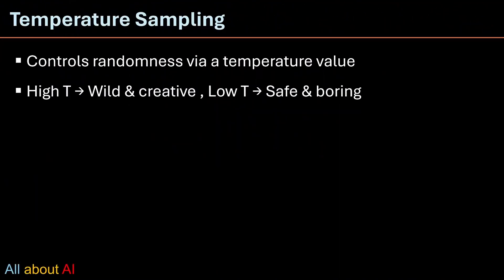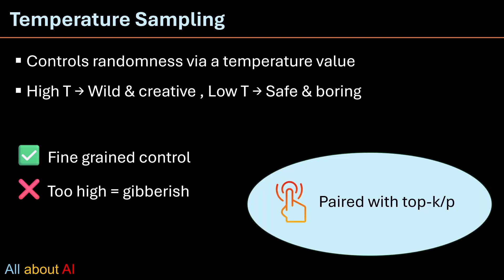Temperature sampling. Think of temperature like a creative dial. Set it low and the model plays it safe. Perfect for facts. Crank it up and things get weird. Wonderfully messy. Temperature is rarely used alone and it's often combined with top K and top P for balance. Too high temperature, most of the time, it will give a gibberish result. It's paired with top K, top P for better performance.